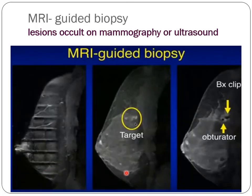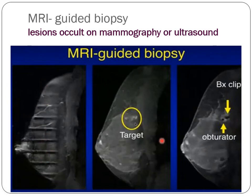Because MRI has high sensitivity for detecting occult and non-mass lesions, MRI-guided biopsy should be chosen when such lesions are identified only on MRI. This involves special equipment — shown here are the grid, needles, and targeting system used during MRI-guided biopsy.